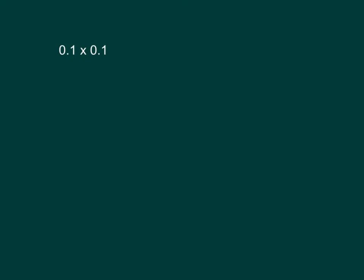Write this as a fraction multiplication sentence and then solve it. We have one-tenth times one-tenth, which equals one-hundredth, which equals 0.01.